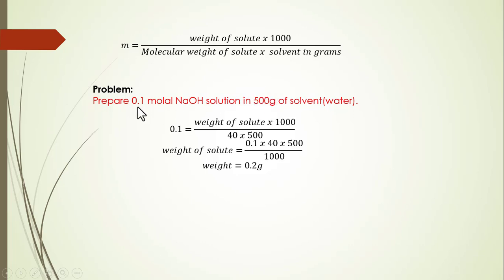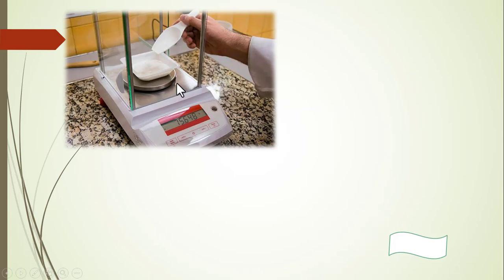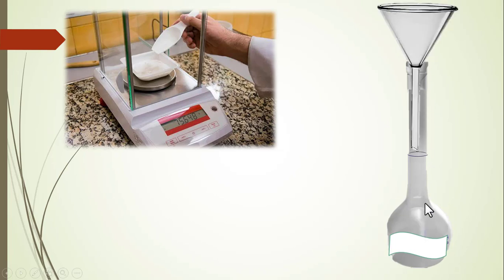Now weigh out 2 grams of sodium hydroxide and also weigh out 500 grams of water. Transfer this water as well as this sodium hydroxide into this flask. Shake it well. Now your solution is ready.